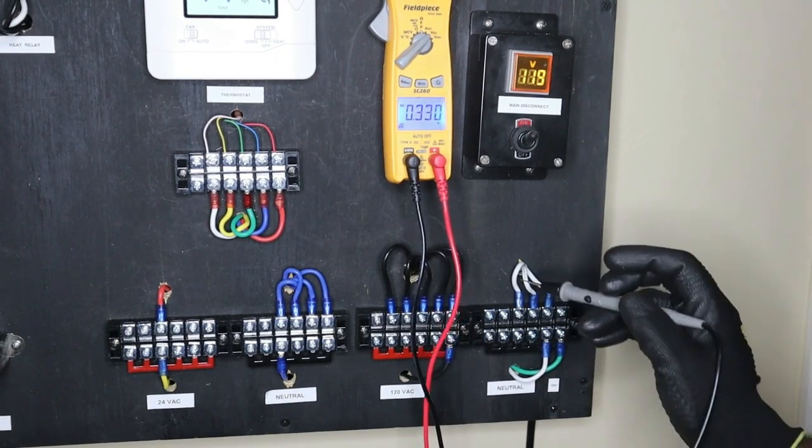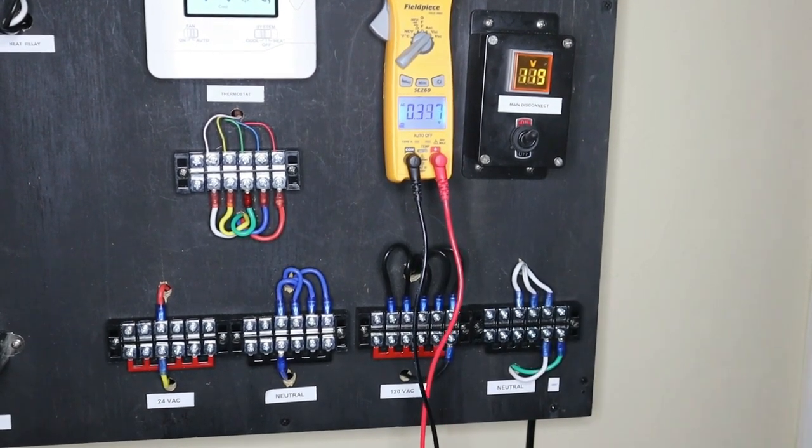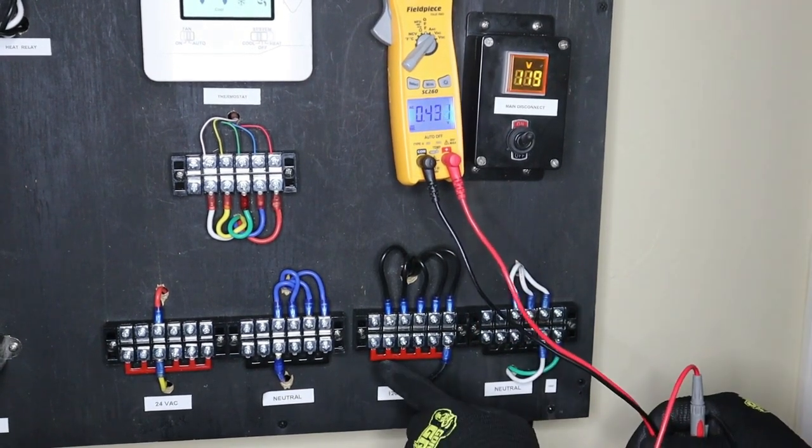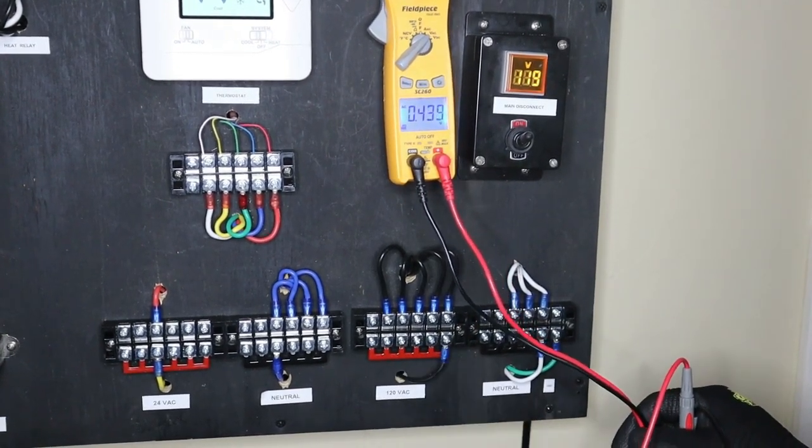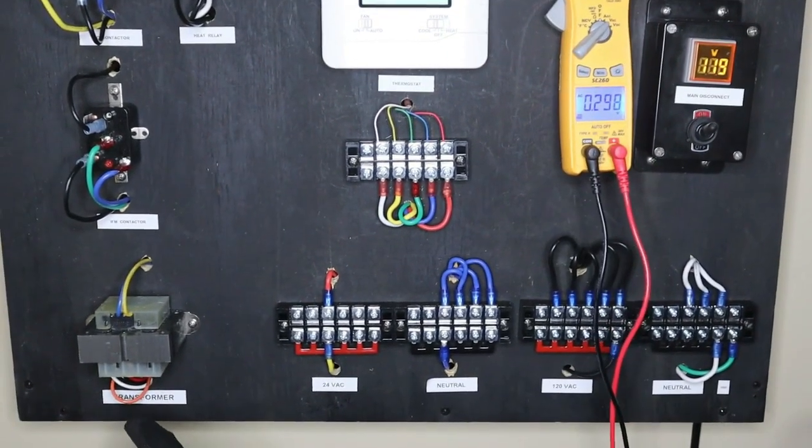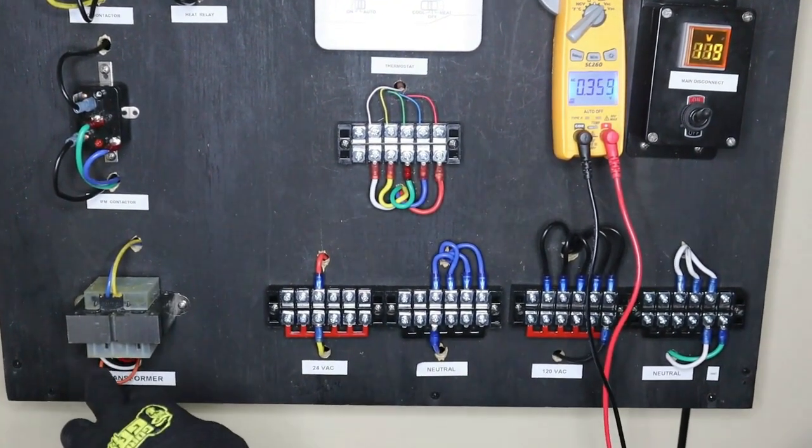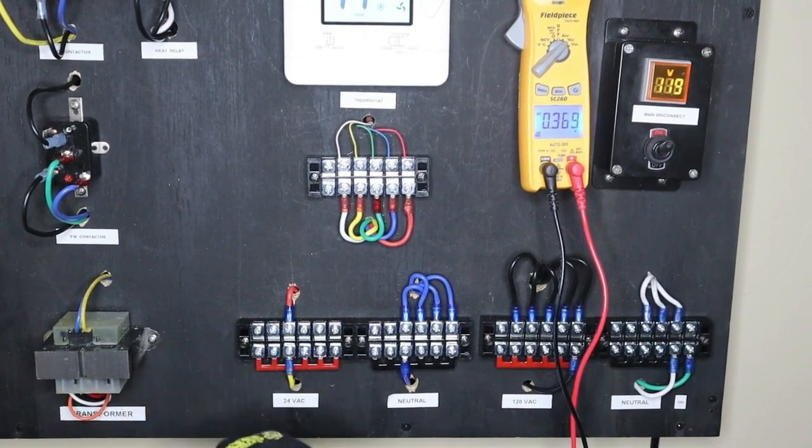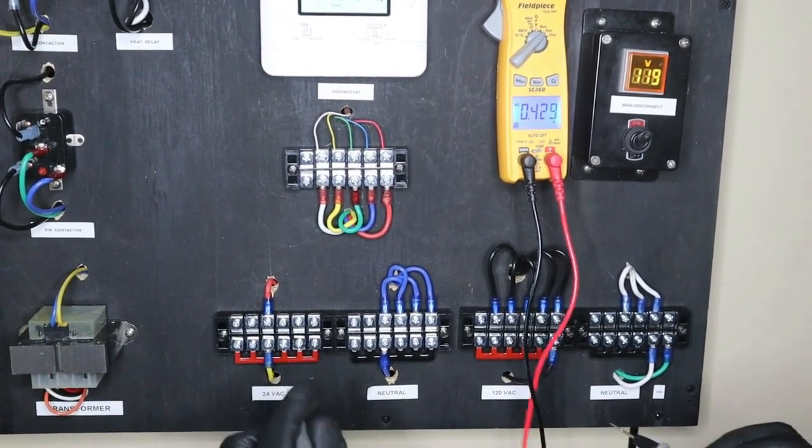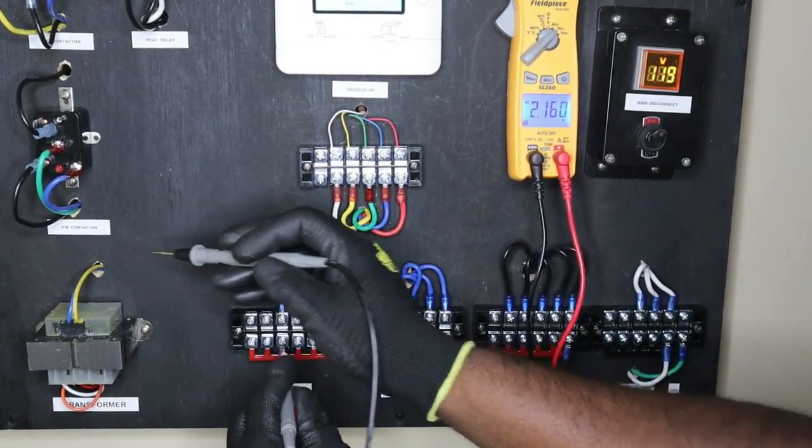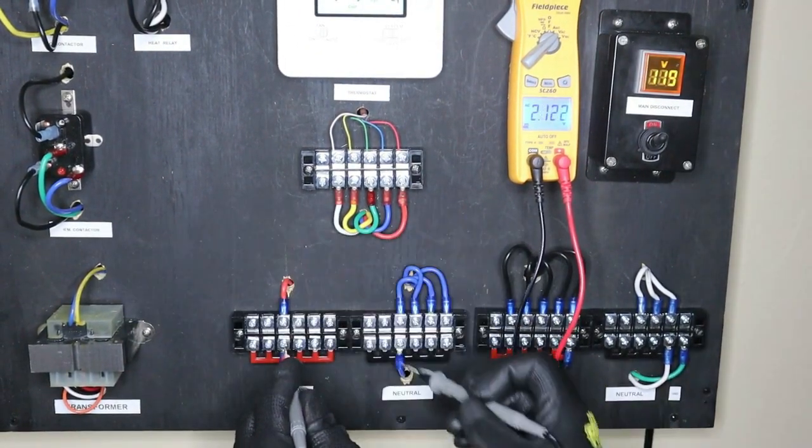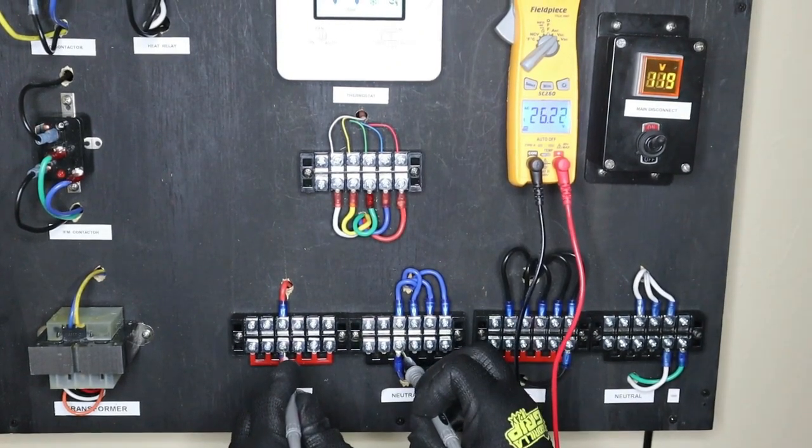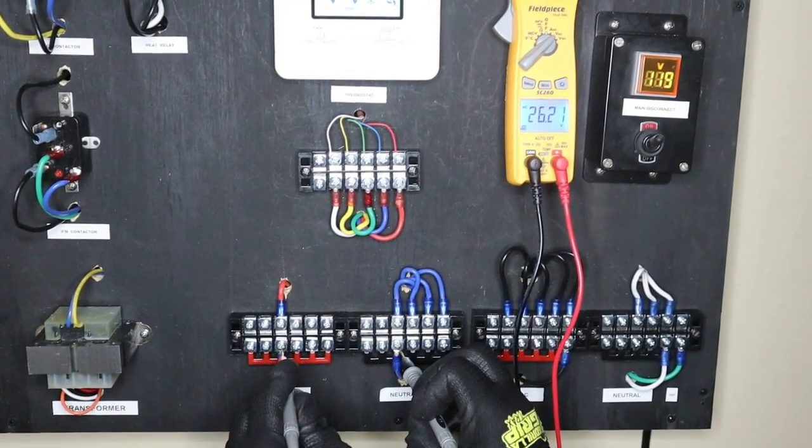Now when that 120 volts comes in one leg from my terminal block, and as you can see they're all jumpered, feeds to my transformer. My transformer then steps down the 120 volts to a low voltage 24 volts AC. So if I should measure here which is my yellow coming from my transformer and my blue coming from my transformer I have 26 volts AC.